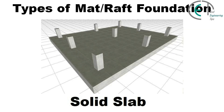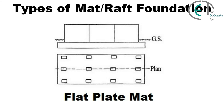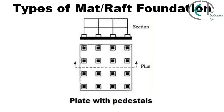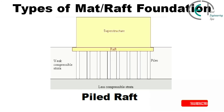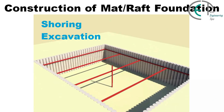Now I will show you some samples or types of raft or mat foundation. The types are: solid slab, beam slab, flat plate mat, plate thickened under columns, plate with pedestals, piled raft, and rigid frame or cellular. Now I will demonstrate the whole construction process of mat or raft foundation step by step.